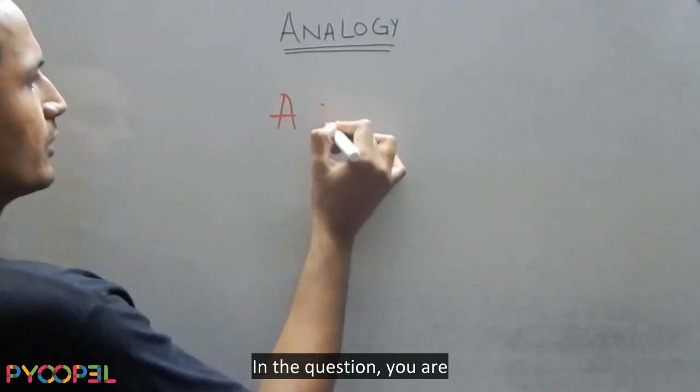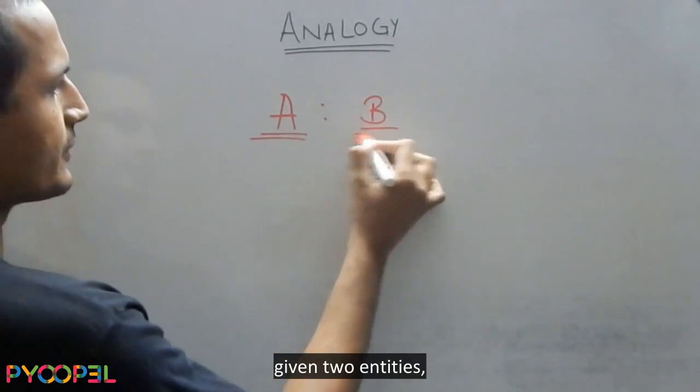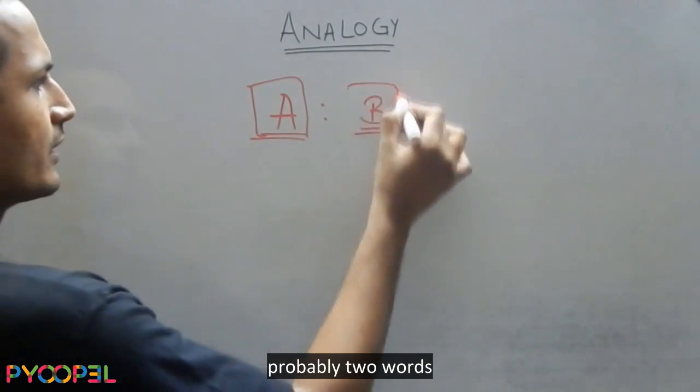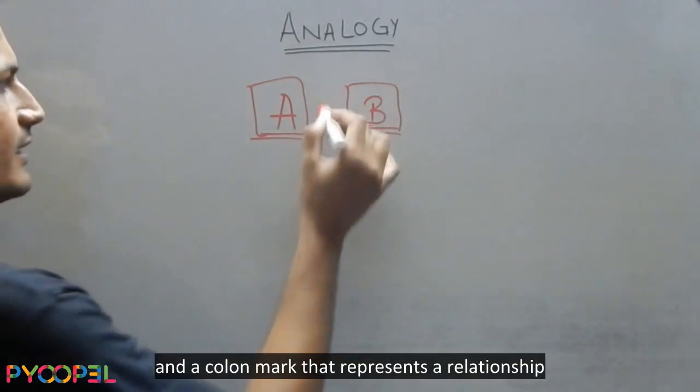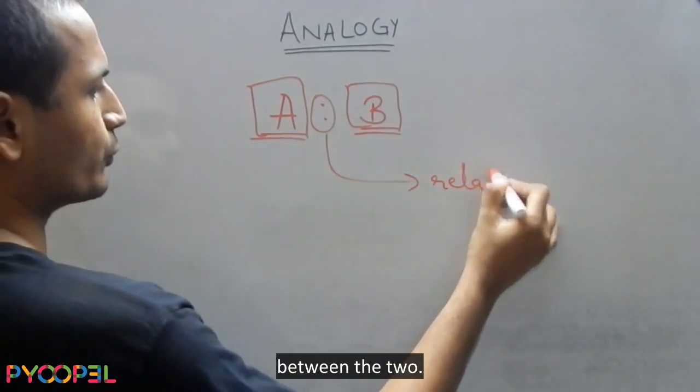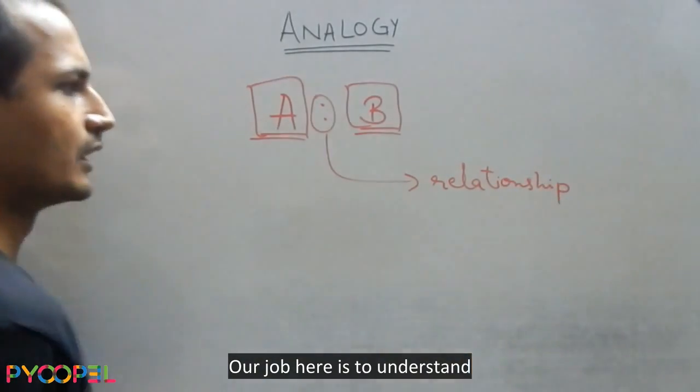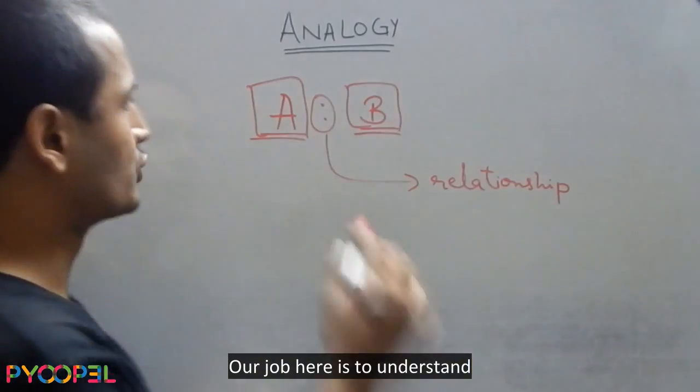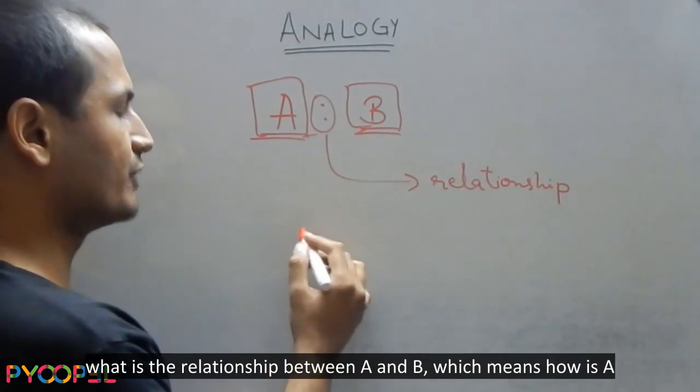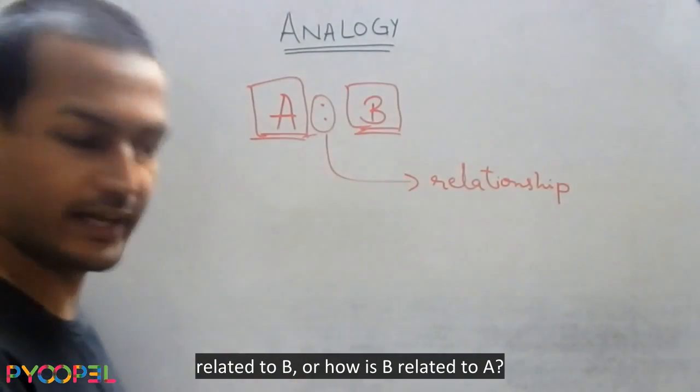In the question, you are given two entities, probably two words, and a colon mark that represents a relationship between the two. Our job here is to understand what is the relationship between A and B, which means how is A related to B or how is B related to A.